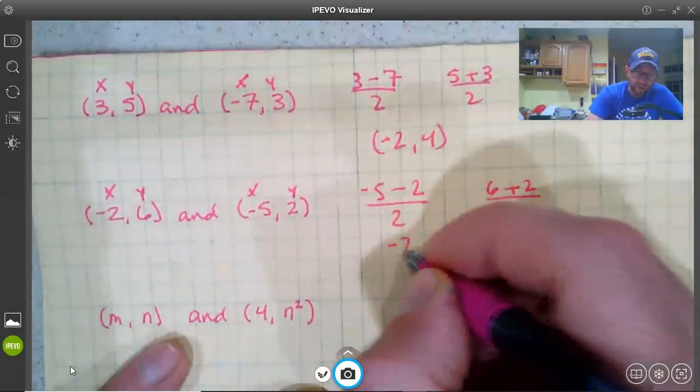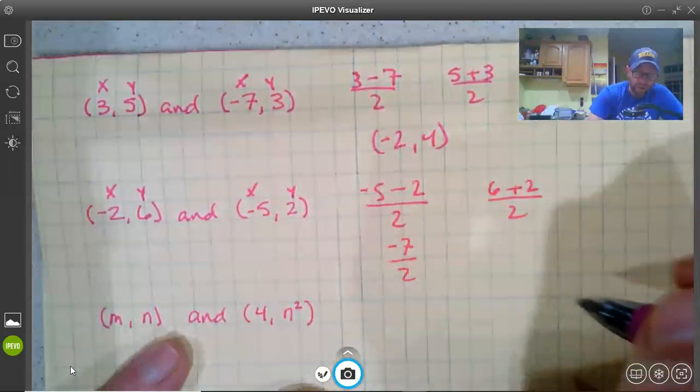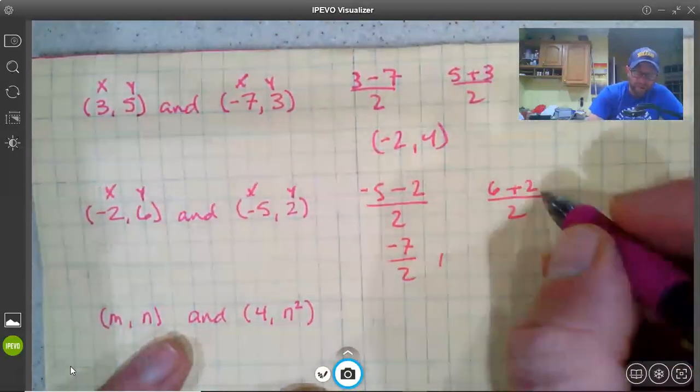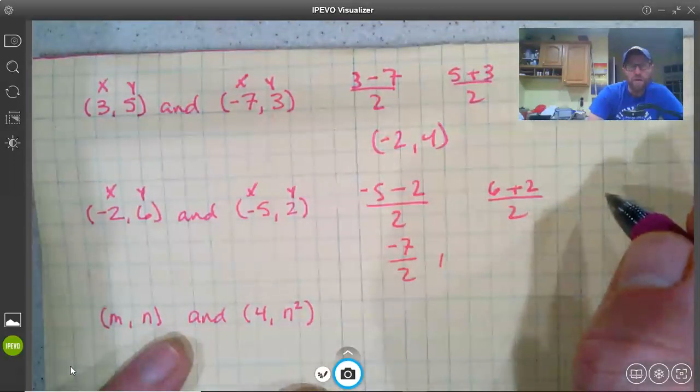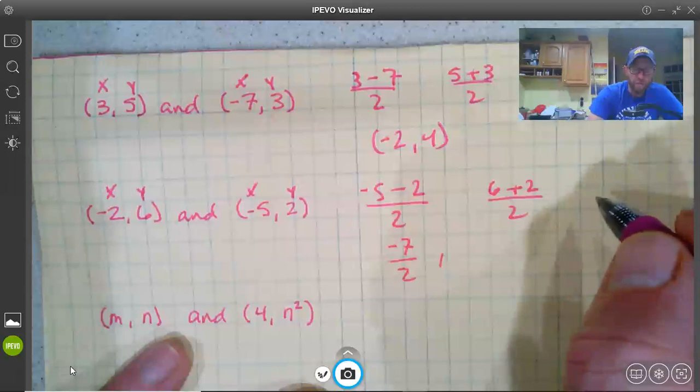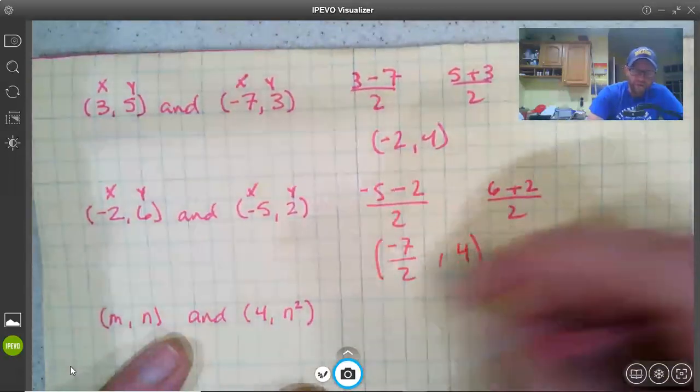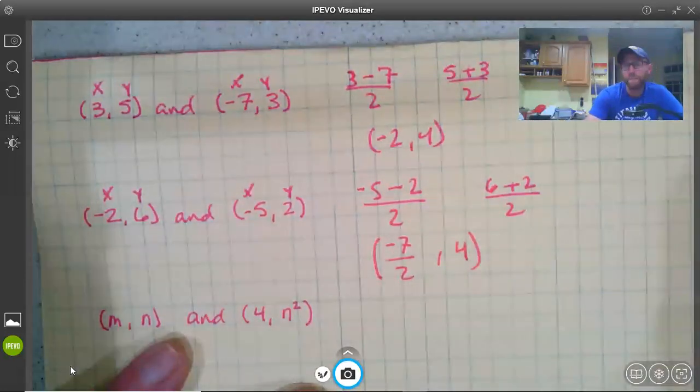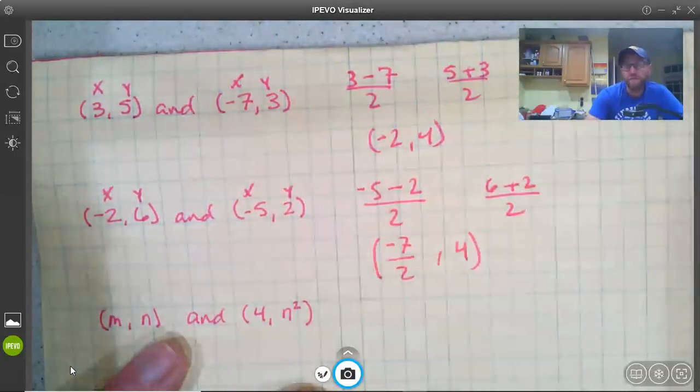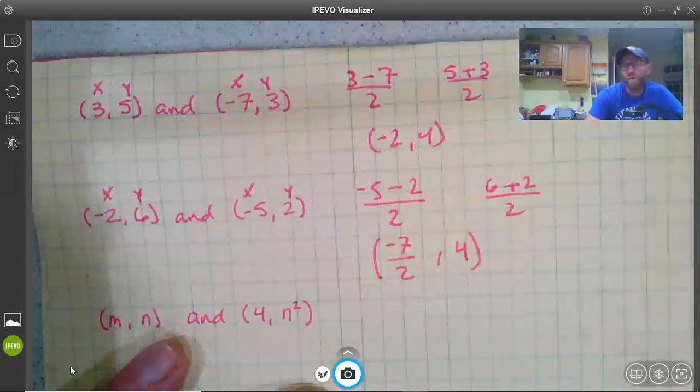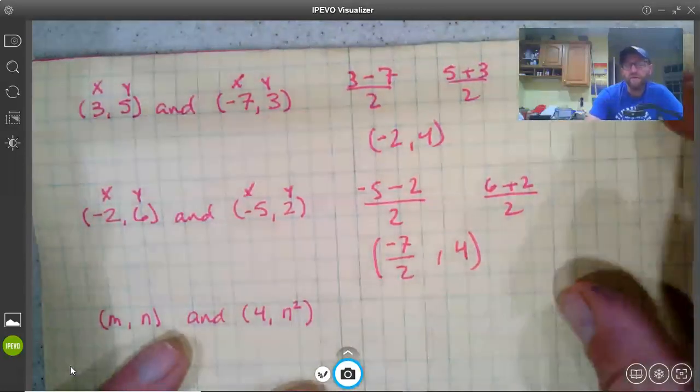Let's see. Negative 5 minus 2 is negative 7 over 2. Now 6 plus 2 is 8 divided by 2 is 4. So there's our coordinates. It's negative 7 halves and 4. And that's perfectly okay to leave this as negative 7 halves. If you want to turn it into a decimal, it's negative 3.5, but actually, it's probably better just to leave it as a fraction.